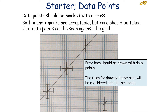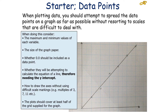Error bars should also be drawn with data points, and the rules for these will be considered later in the lesson. When plotting data, you should attempt to spread the data points on a graph as far as possible without resorting to scales that are difficult to deal with. To do this, consider: the minimum and maximum values of each variable, the size of the graph paper, whether (0,0) should be included as a data point, whether you need the y-intercept, how to draw axes without difficult scale markings — so multiples of 3, 7, or 11 will be very difficult — and that the plot should cover at least half of the grid supplied.